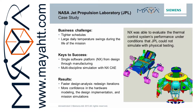Multi-discipline simulation with NX CAE played a key role at NASA JPL in development of the Mars Curiosity rover, which is currently touring around Mars and making the newspapers on a regular basis with its discoveries. JPL wanted to use a single software platform from design through manufacturing to reduce risk caused by trying to link stand-alone systems together. JPL used NX thermal analysis to evaluate the thermal control system's performance under conditions that JPL could not simulate with physical testing. They also used NX motion analysis to determine if there might be interference issues between various moving equipment on the rover. The result for JPL was faster and fewer design iterations, meaning they were able to compress design schedules. They also required less physical prototypes and experienced fewer design issues during mission simulations.